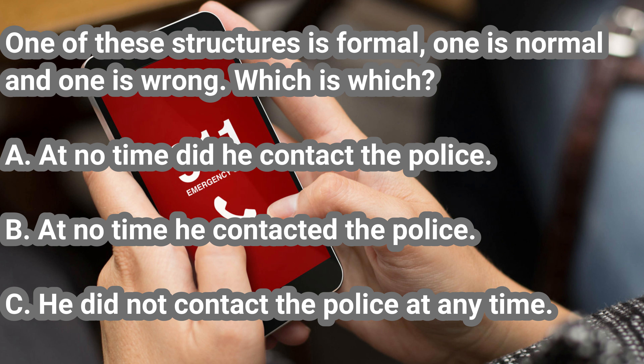But why did we do this? One of the cases in which we use inversion is when we use a negative adverbial expression at the beginning of a sentence for emphasis, which, by the way, makes the sentence formal. The negative adverbial expression in A is 'at no time.' Because of this expression, we used 'did he contact' in A, and using 'he contacted' in B is wrong.